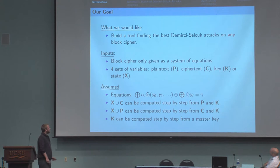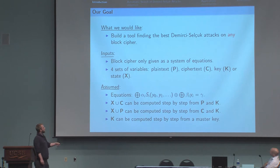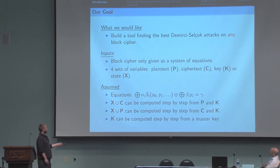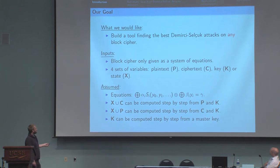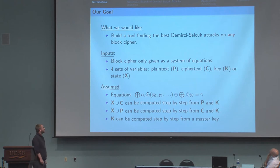We also impose some natural conditions on the system of equations. That means from the knowledge of the plaintext and the key, we can compute all intermediate state variables and the ciphertext. And of course, the same from the ciphertext and the key. And that all the key variables can be computed from a master key. So natural conditions for a block cipher.